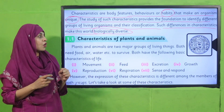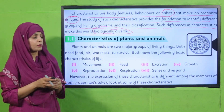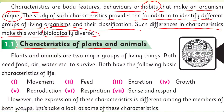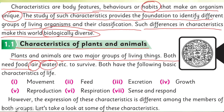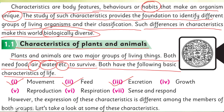Now let's start the topic: Characteristics of Plants and Animals. Plants and animals are the two major groups of living things. Both need food, air, water, etc. to survive. Both have the following basic characteristics of life: movement, feeding, excretion, growth, reproduction, respiration, and sense and respond.